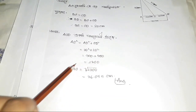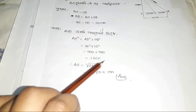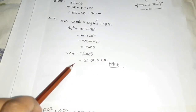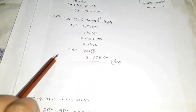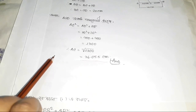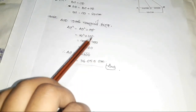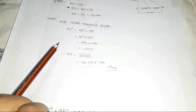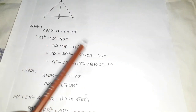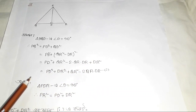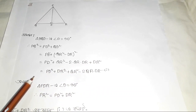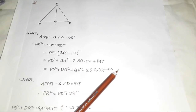We have to write a square root, and ultimately we have to write a square root. I think the root will be the same. Let's look at the number: PQ² is less than PR² plus QR².